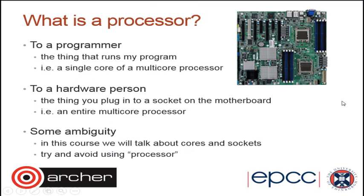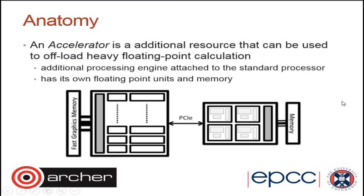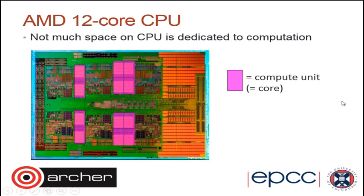Here's an illustration of why they may be useful for scientific computing. In a standard processor, the pink areas represent the floating point units — the bits we use very heavily in computational simulation. Most of the rest of the processor you're not using. But if you look at something like a GPU, a very different kind of processor, you can see those pink floating-point areas are much much bigger, and much more of that chip is dedicated to floating point instructions.